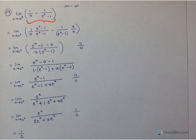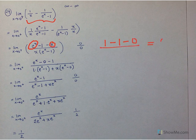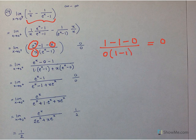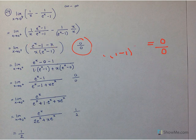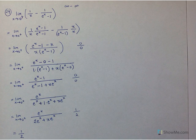Now we try direct substitution again. Substituting x = 0: in the numerator, e^0 - 1 - 0 = 1 - 1 - 0 = 0. In the denominator, 0·(e^0 - 1) = 0·0 = 0. So we get 0/0 — an indeterminate form, but one for which L'Hôpital's Rule applies. Our next step is to use L'Hôpital's Rule: take the derivative of the numerator and the derivative of the denominator.